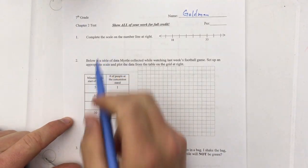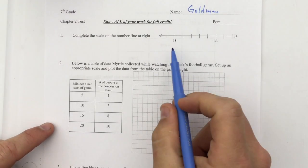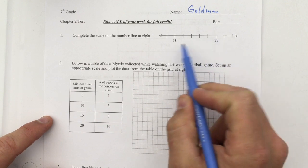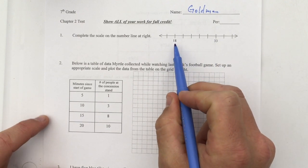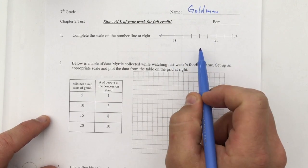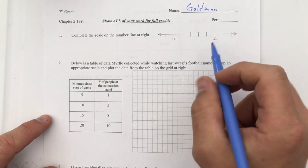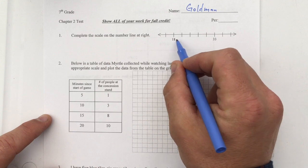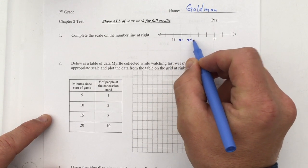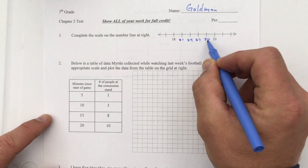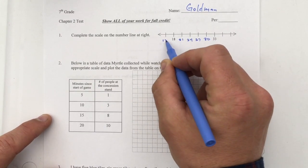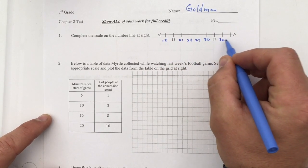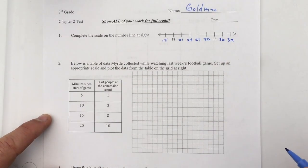Number 1, complete the scale on the number line at right. I see an 18 and I have some spaces to 33. That's 1, 2, 3, 4, 5 spaces. I need to add 15 to 18 to get to 33. And 15 divided by 5 is 3. I can also have done this by guessing and checking. So let's say 3, that would make this 21. Add 3, I get 24. Add 3, I get 27. Add 3, I get 30. Add 3, I get 33. It works. Finishing both ways: 16 is not 18 minus 3, but 15 is. 36 and 39.